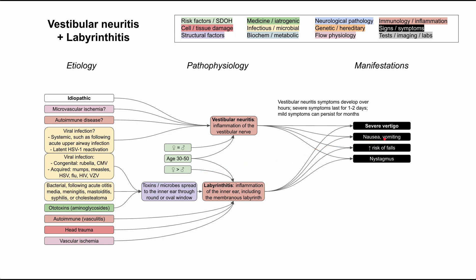The symptoms of labyrinthitis are very similar to vestibular neuritis. Patients still have vertigo, associated nausea and vomiting, increased risk of falls, and nystagmus. In addition, they also have hearing loss and tinnitus. So it's kind of like vestibular neuritis plus — it's affecting the entire labyrinth, not just the nerve that leaves the vestibular system, so it's broader in its manifestation and presentation.